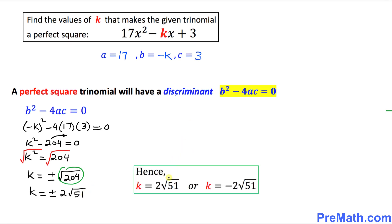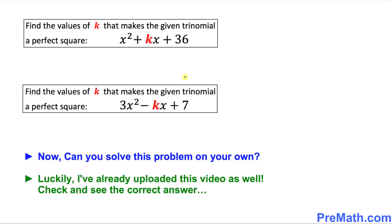So our k values turn out to be 2 times the square root of 51 or negative 2 times the square root of 51. That is our answer. Here is your assignment — can you do it on your own? You can take your time. I have already uploaded that video as well, so please go ahead and check it out to see the correct answer. Thanks for watching, and please don't forget to subscribe to my channel for more exciting videos.